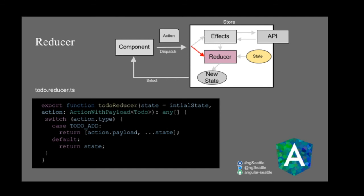Here's the to-do reducer. It starts with an initial state — in this case a blank object — and takes a to-do. A reducer is essentially a switch statement that looks at the action type. For 'TODO_ADD', it returns the new state by copying the existing state using the spread operator and merging in the new to-do from the action payload. An important rule: always include a default case at the bottom that returns the existing state unchanged when no case matches.